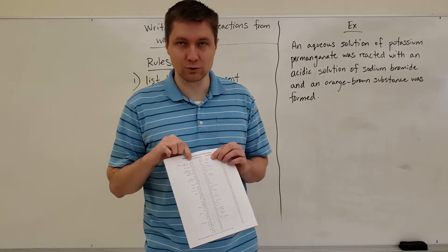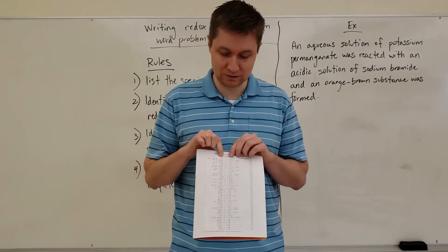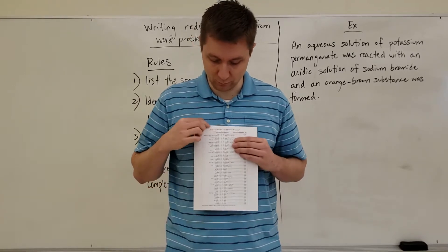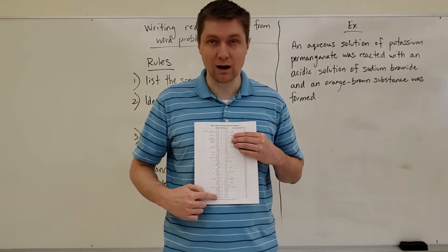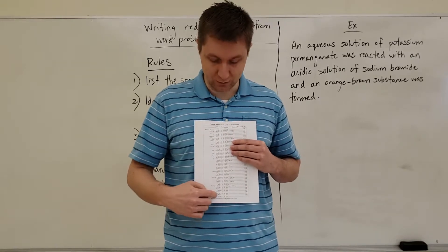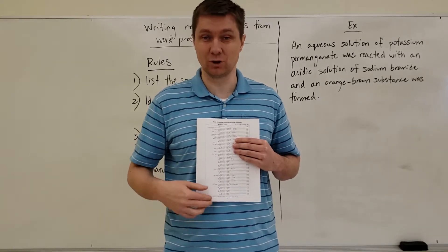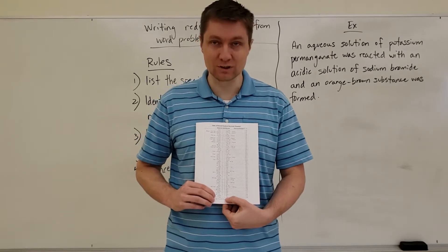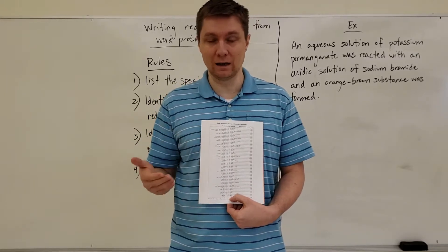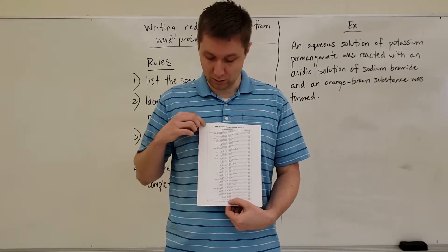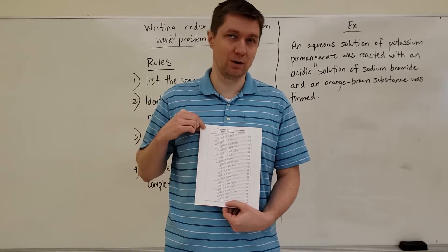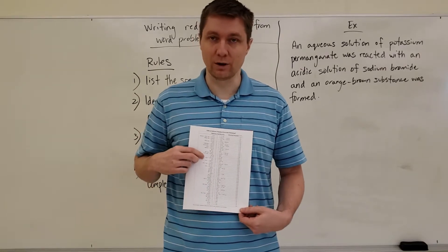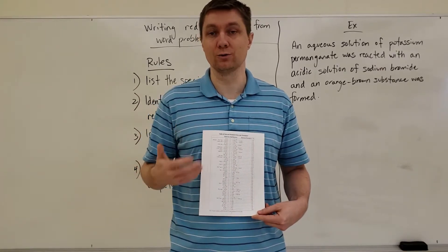If F2 is really good at gaining electrons, that means F⁻ is really terrible at gaining electrons. Conversely, as we move down the chart, lithium ion is at the very bottom, meaning it's very poor at gaining electrons. That means lithium solid would be very good at losing electrons. So while the strongest oxidizing agent is in the top left-hand corner, down in the bottom right-hand corner is where we find our strongest reducing agents.